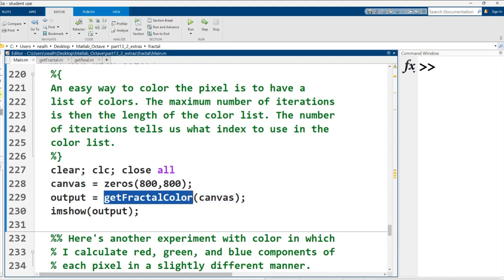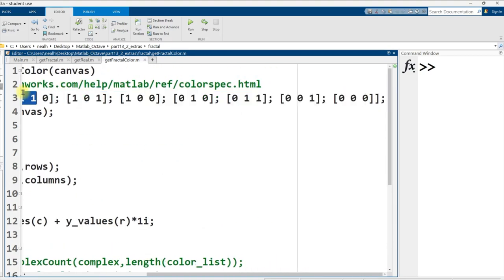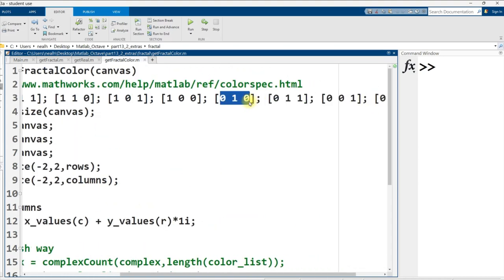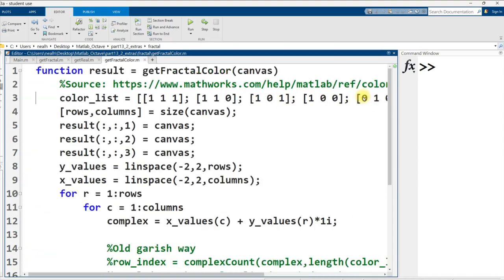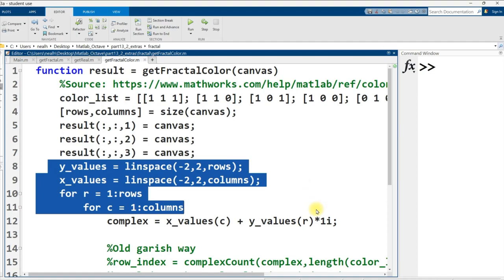Let me show you how I did it. This is in the function getFractalColor. It's very similar to the code that I did before with some small adjustments. First of all, I have a color list. Every pixel has a red, green, and blue component. This means 100% red, green, and blue all mixed together. This means 100% red and green and zero blue. This one is all red. This one is all green. And this one is all blue.